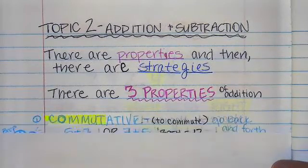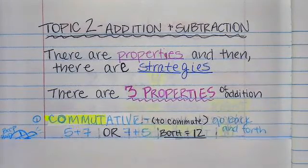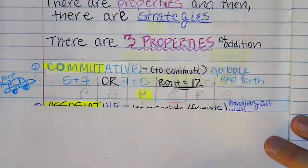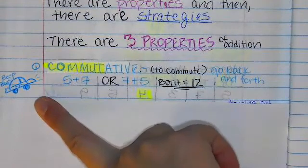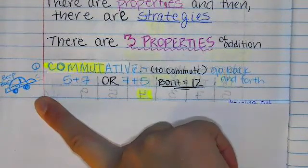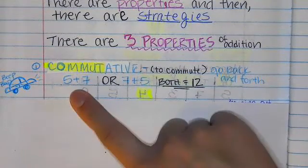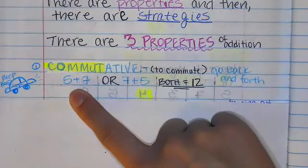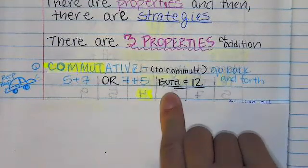The first one is the commutative property to commute. You can see I have a little car here that I have drawn. It means like when you are driving, like I would drive from my house to Ross and from Ross back home. I'm commuting to go back and forth. Like I said, it's saying 5 plus 7 or 7 plus 5. It doesn't matter which order you put it. Both are going to equal 12.